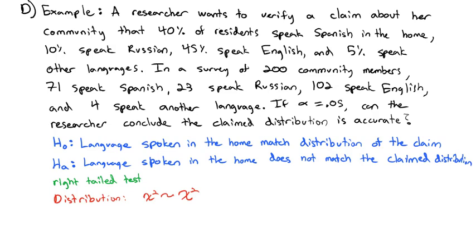The distribution is a chi-squared distribution. We have four categories: Spanish, Russian, English, and other. The degrees of freedom is always one less than the number of categories, so we have three degrees of freedom.